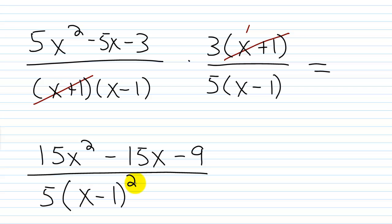So your final answer here is going to be 15x squared minus 15x minus 9 over 5 times x minus 1 squared.